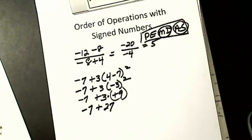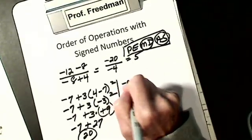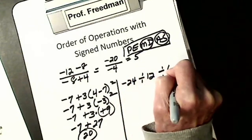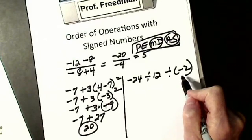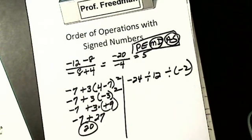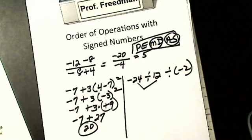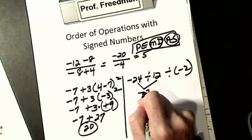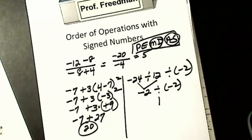Subtract, take the sign of the larger — I get positive 20. Next example: negative 24 divided by 12 divided by negative 2. Nothing to do in parentheses — parentheses means when there's something to do inside, and there isn't. No exponents. I do all multiplications and divisions from left to right: 24 divided by 12 is 2, unlike signs are negative, so negative 2. Then negative 2 divided by negative 2: like signs are positive, I get positive 1.